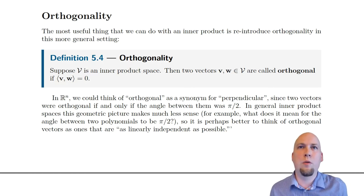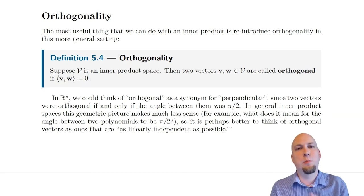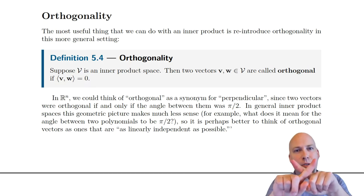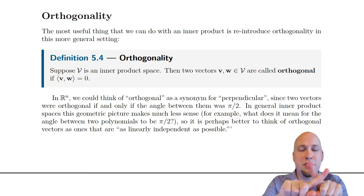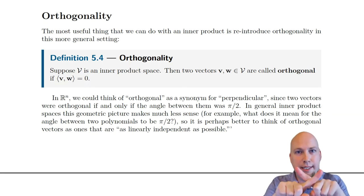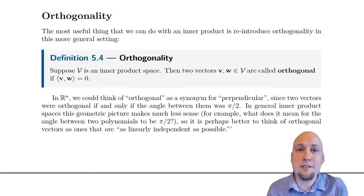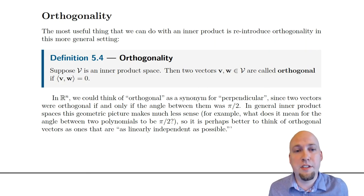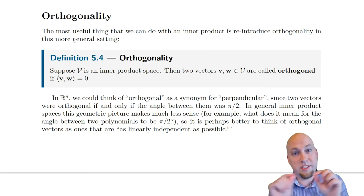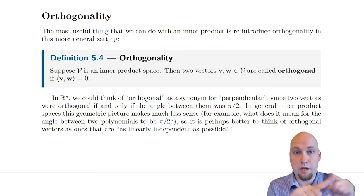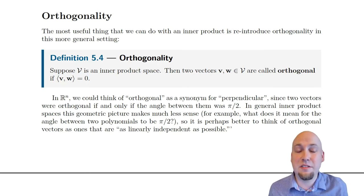Remember back then what orthogonality meant was that two vectors were perpendicular to each other. The angle between them was pi over 2 or 90 degrees. The way that you checked orthogonality was you computed the dot product between the two vectors. If that dot product equaled zero they were orthogonal, and if it equaled anything else they were not orthogonal.